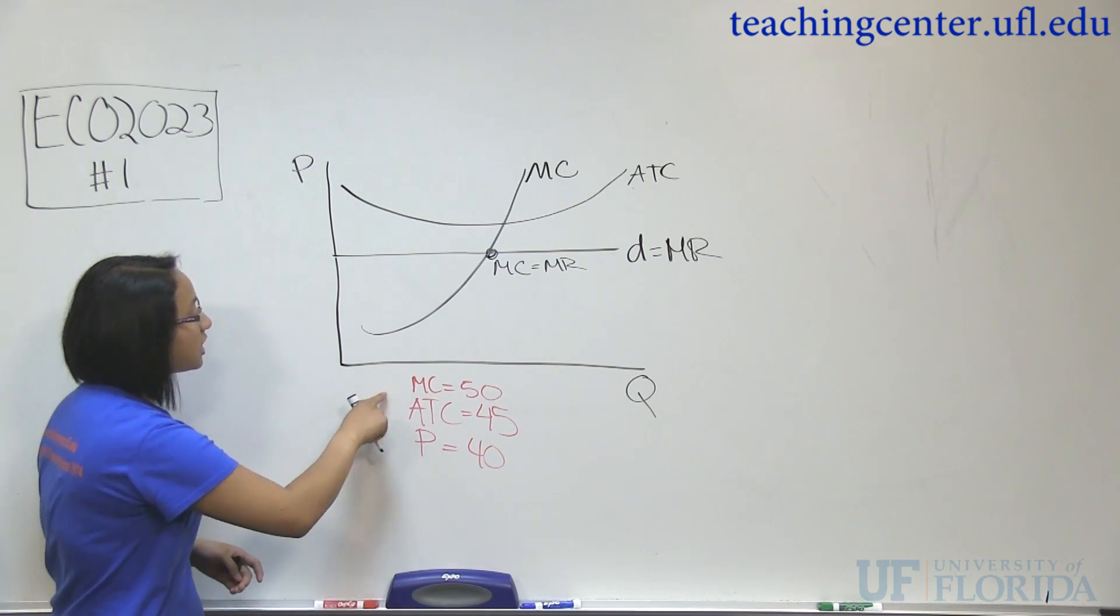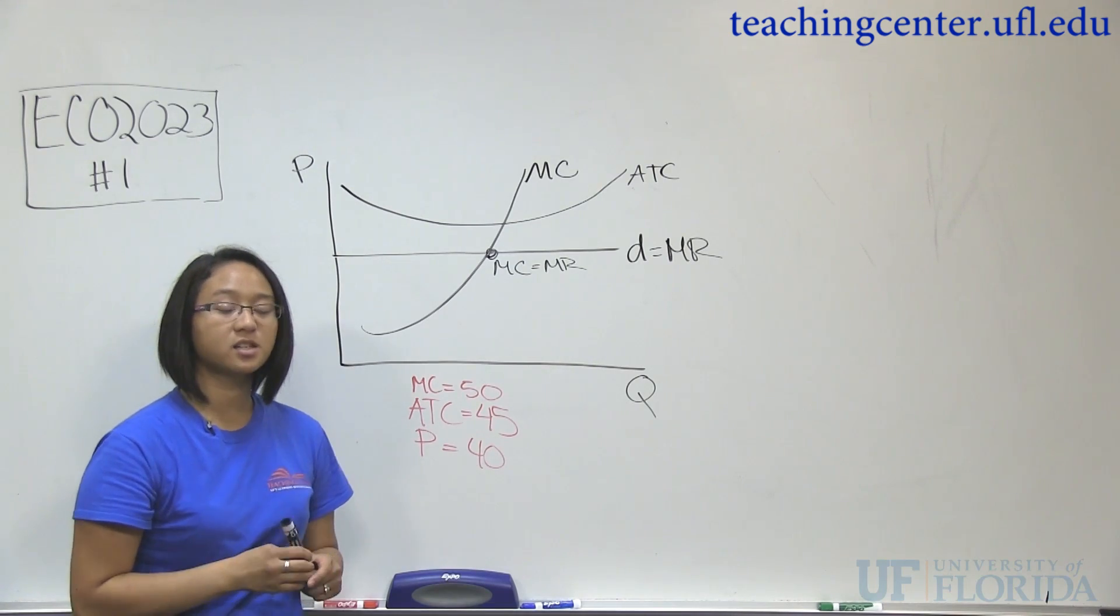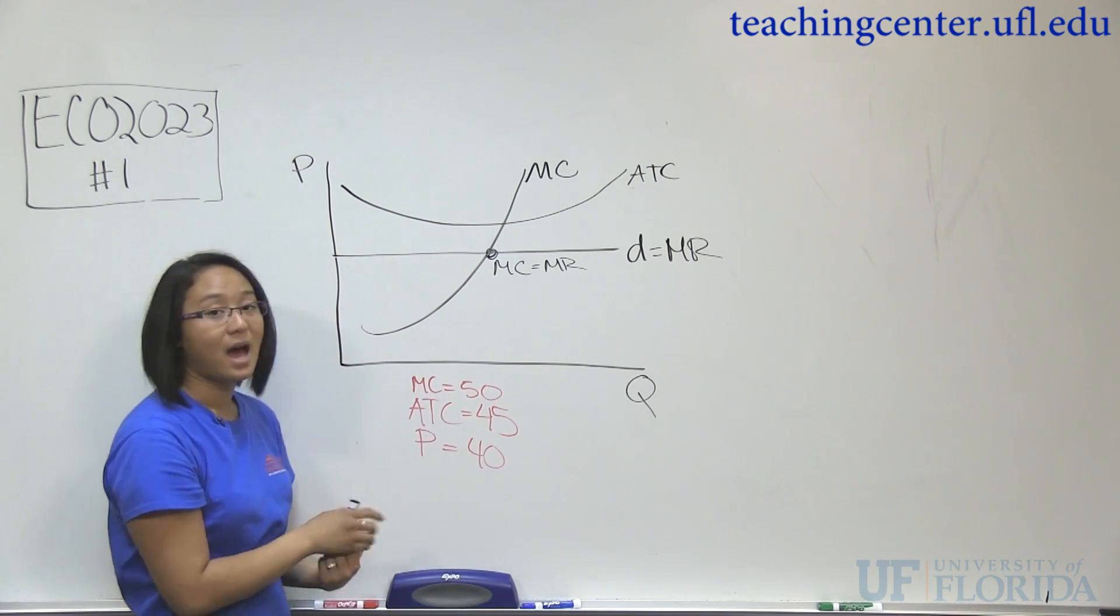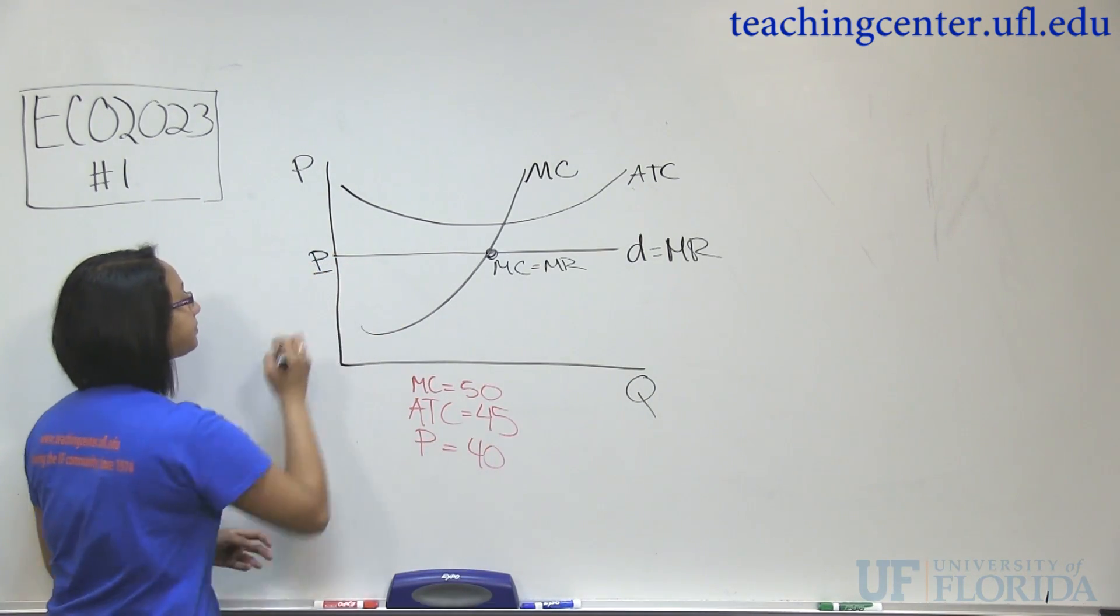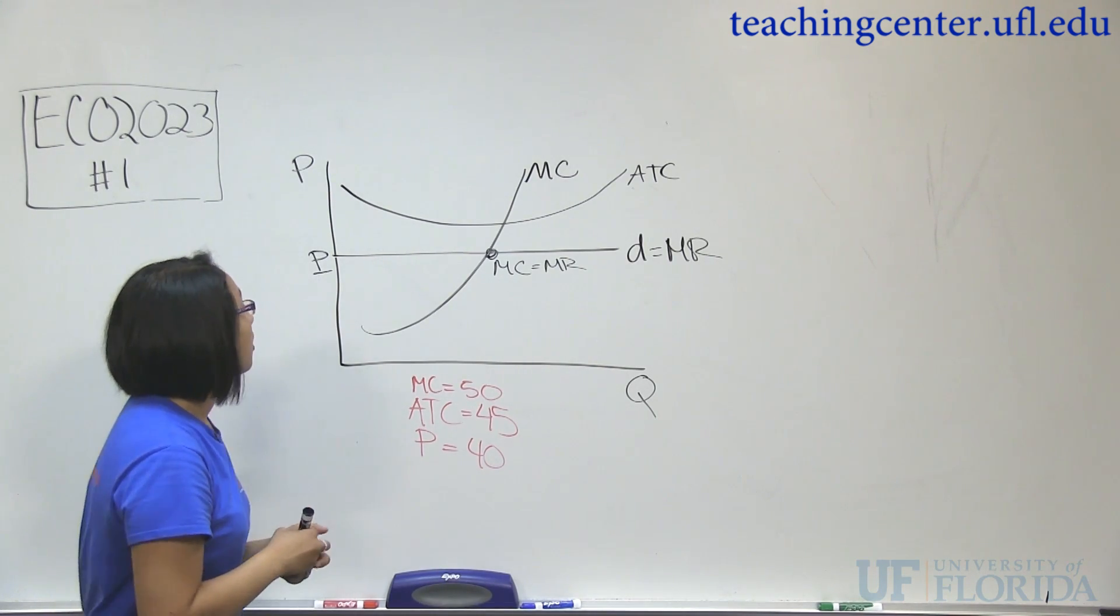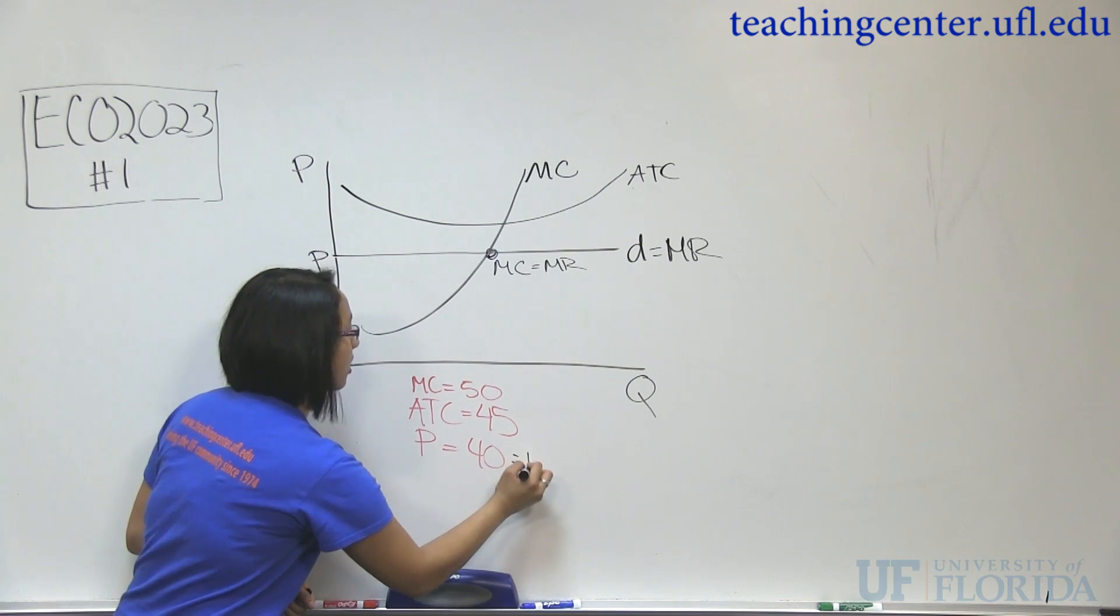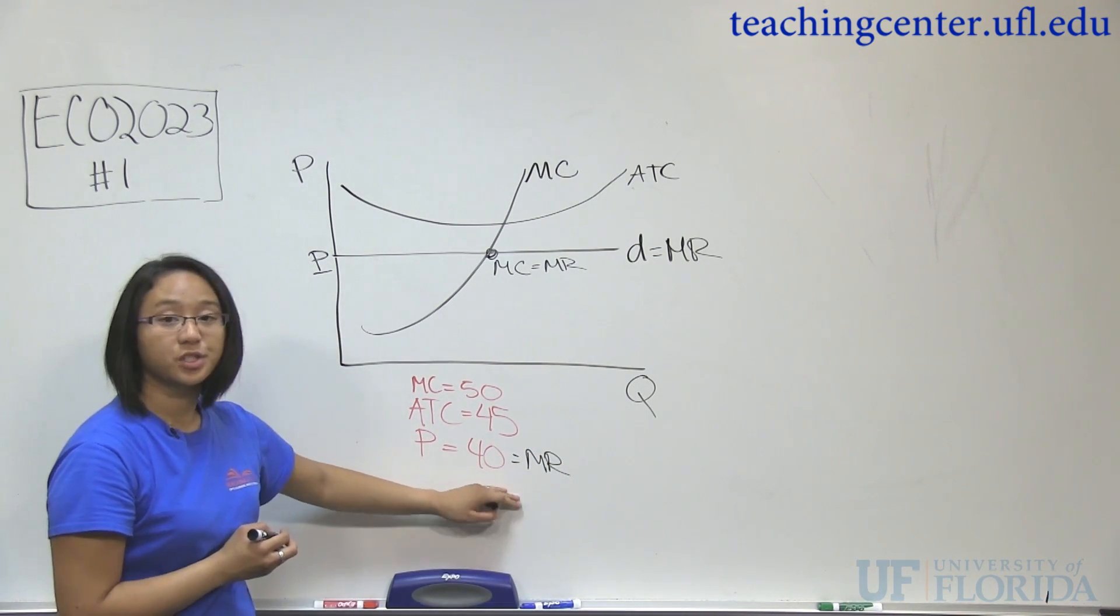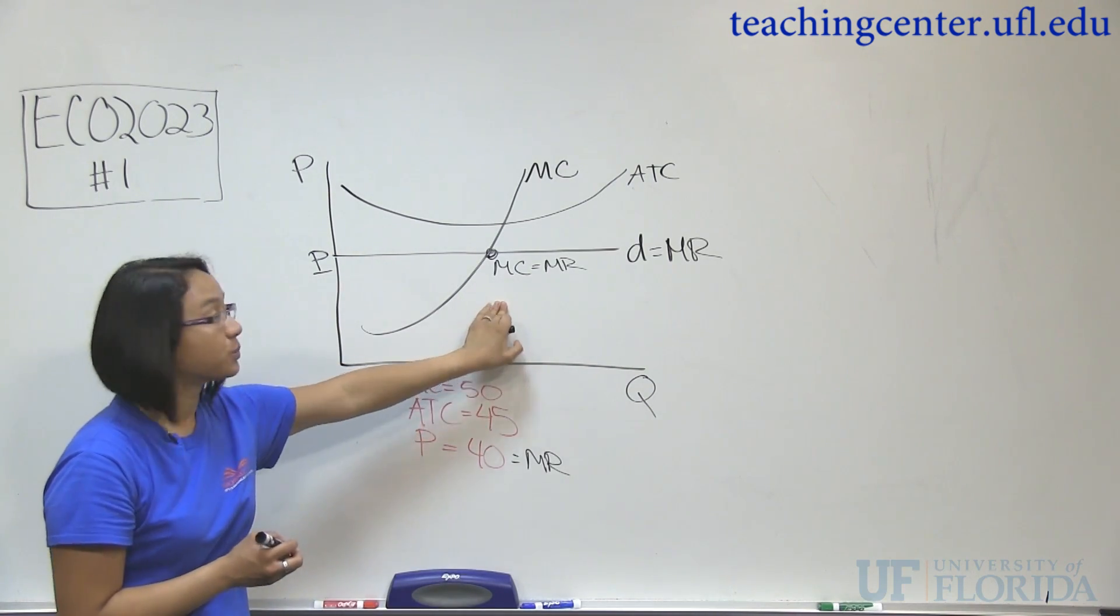She gives us that marginal cost is 50, but she doesn't explicitly give us what the marginal revenue is. But what you know from the graph is that marginal revenue is equal to our price. And that's true for all perfectly competitive firms. So we know that price is marginal revenue as well. So if marginal revenue is 40, but marginal cost is 50, we're not producing at this point.